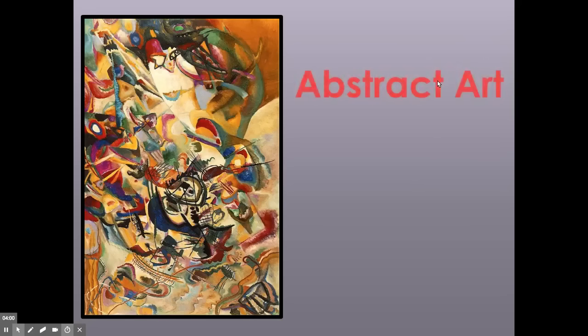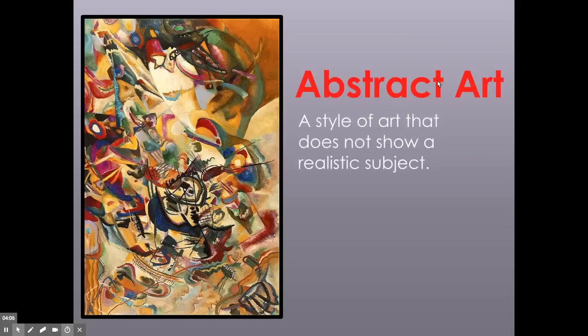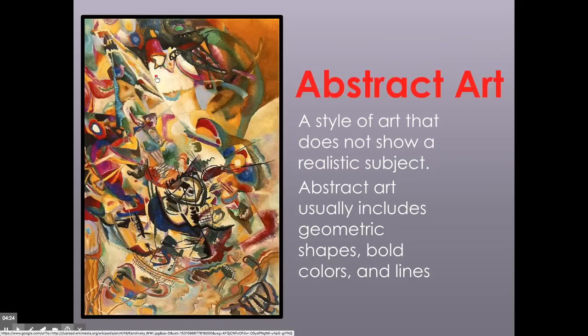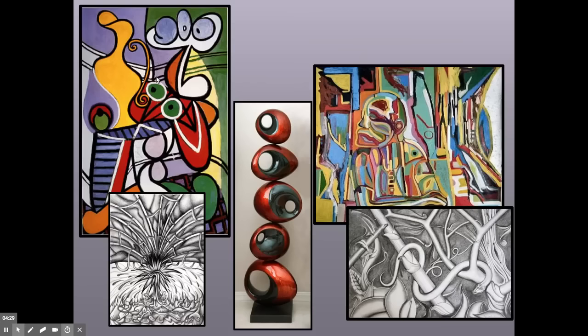We call this type of work abstract art. Abstract art is a style of art that does not show a realistic subject. There is nothing realistic in here. It is mostly created with geometric shapes, bold colors, and lines. We don't know what this artwork necessarily means immediately when we first see it, but we start enjoying it for the shapes and the colors that it has. So that is what abstract art is. These are samples of abstract art.